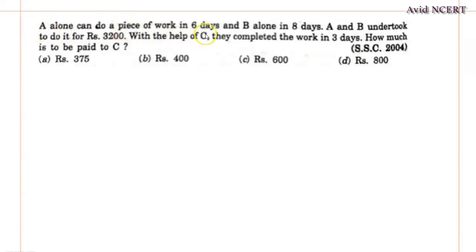A alone can do a piece of work in 6 days and B alone in 8 days. A and B undertook to do it for Rs. 3,200. With the help of C, they completed the work in 3 days. How much is to be paid to C?